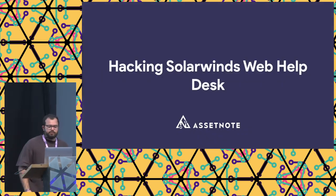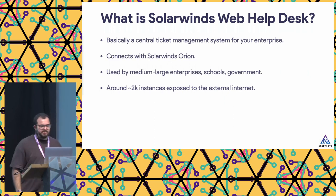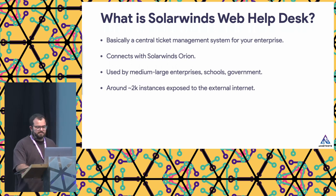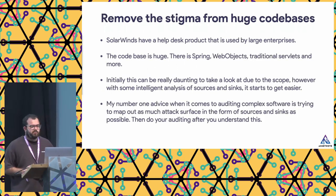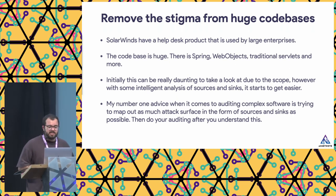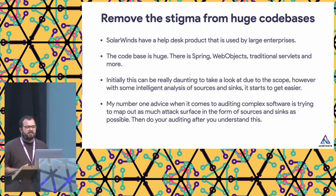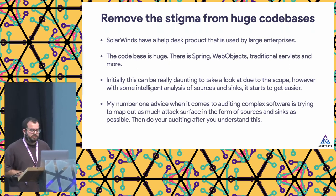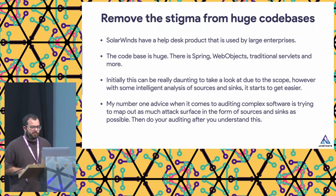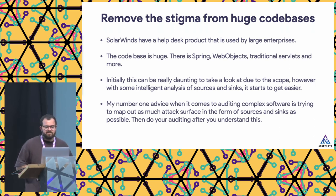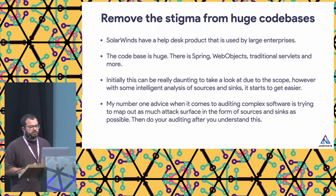The next enterprise technology is SolarWinds Web Help Desk — a central ticket management system that connects with SolarWinds Orion, used by medium to large enterprises, schools, and government, with around 2,000 instances exposed to the external internet. One lesson learned: don't be intimidated by huge codebases. It uses Spring, WebObjects, and traditional servlets — extremely complex. But with intelligent analysis of sources and sinks, it becomes easier. My number one advice for auditing complex software is to map out as much of the attack surface as possible in terms of sources and sinks before doing your auditing.